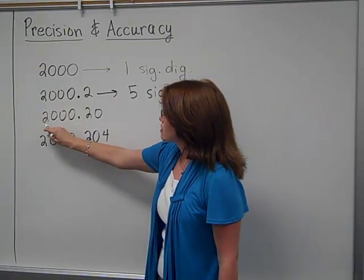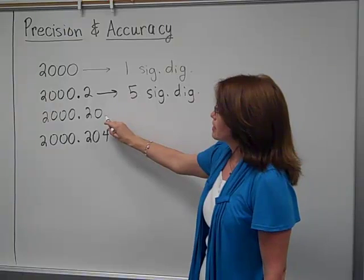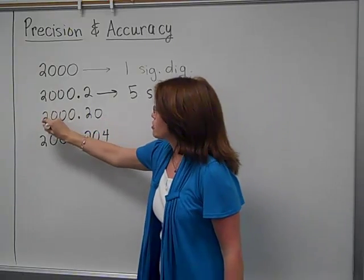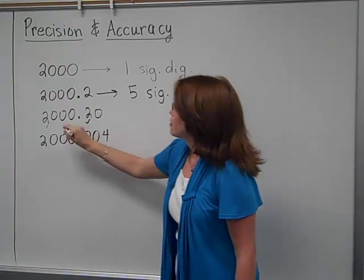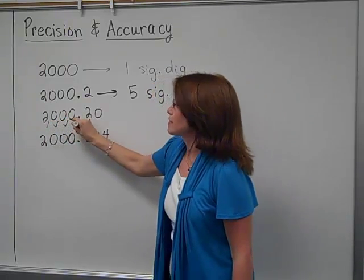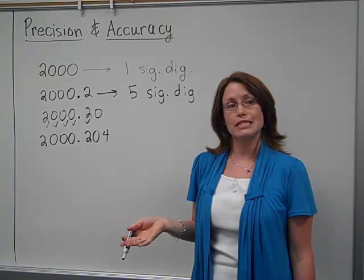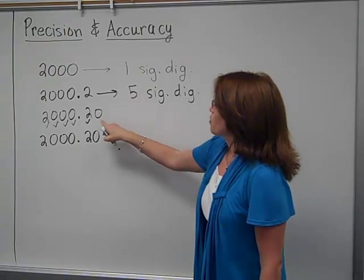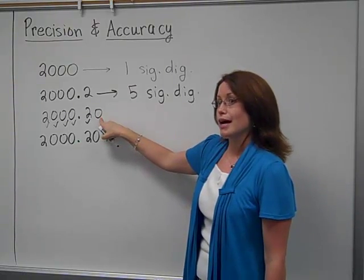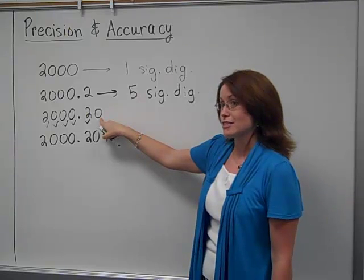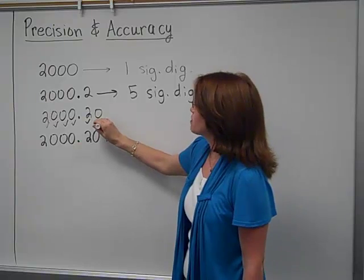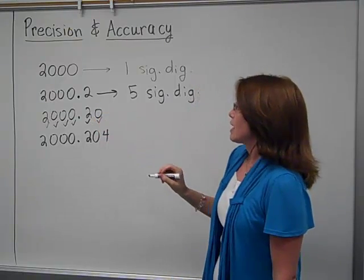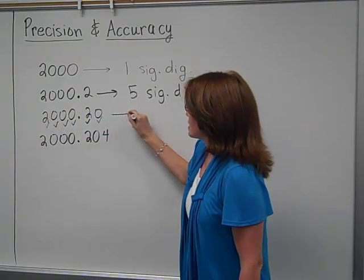Now looking at this third number, 2000.20. If I'm looking at this, I know the twos are significant, that's for sure. They're automatic. I know these zeros are because they're in between two significant digits. What about this last one? Actually it is. That's another exception to the rule, it's kind of a weird one. But this one will be counted as significant, and you end up with six.